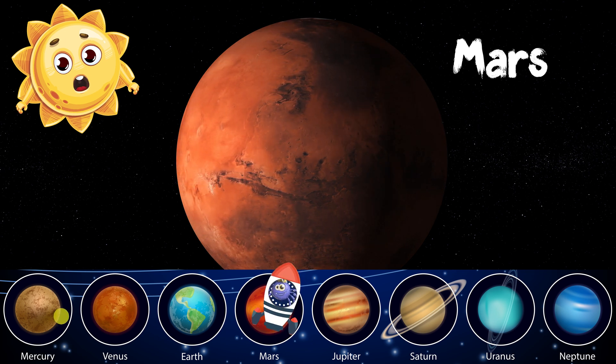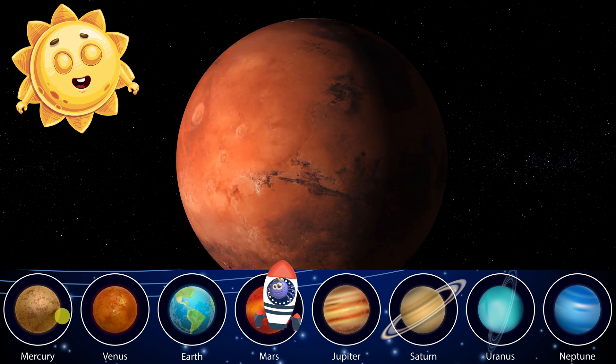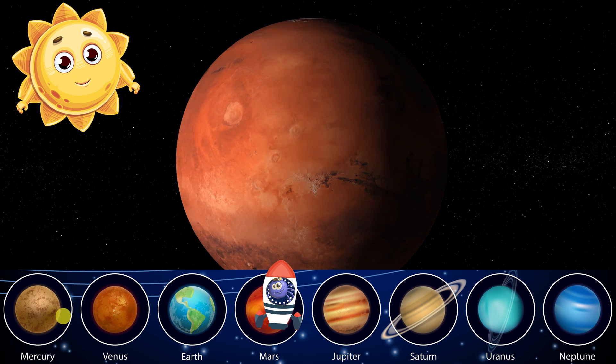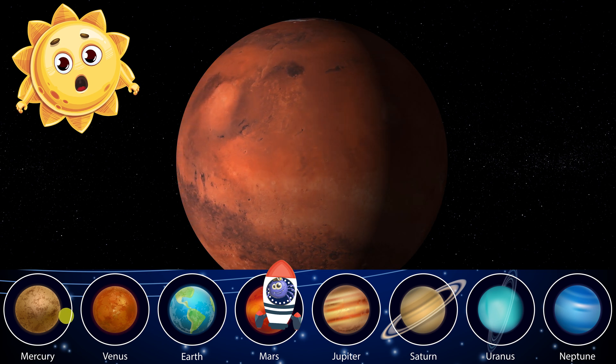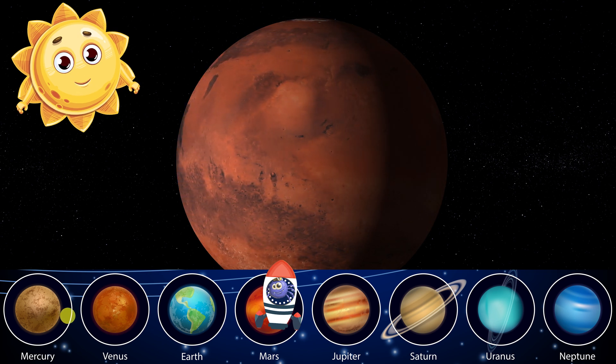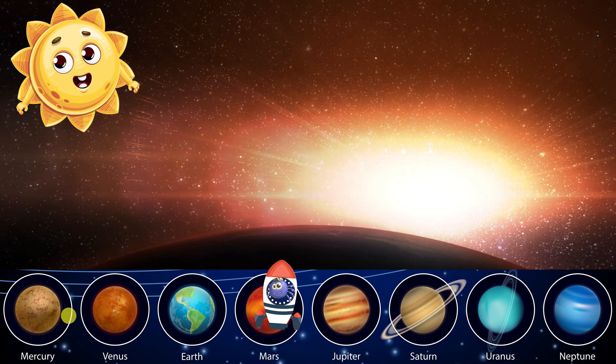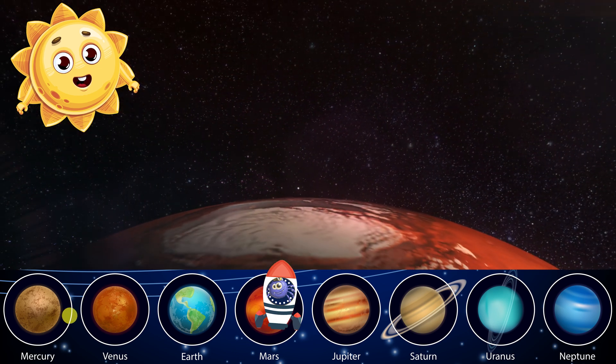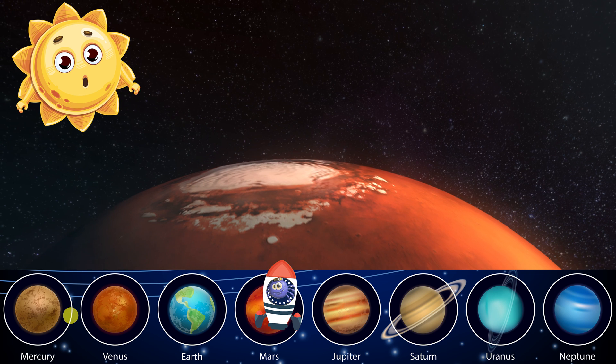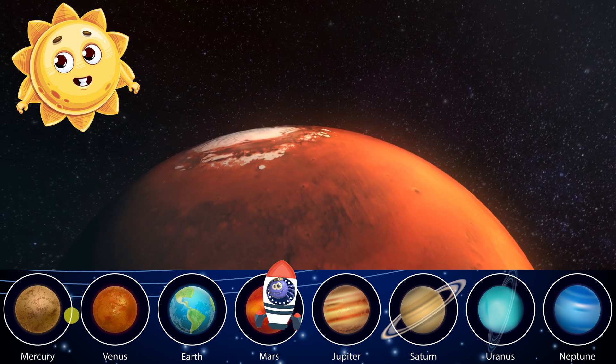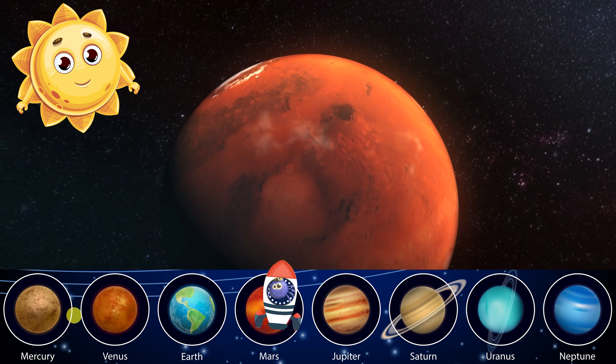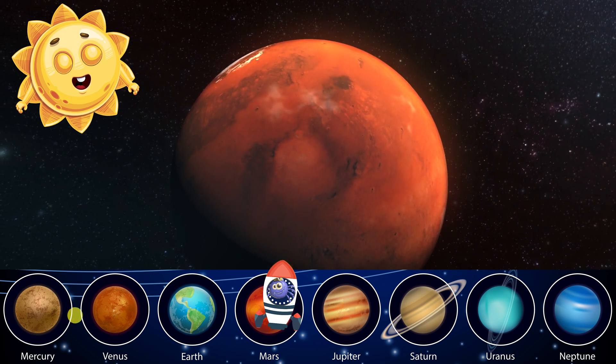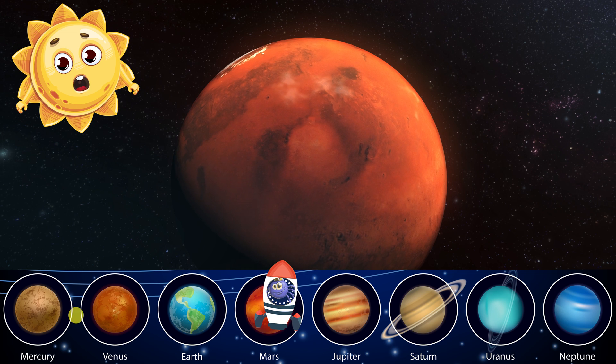Mars is the fourth planet from me and the second smallest one in our solar system. It has a thin atmosphere of carbon dioxide that makes it look red because of dust storms. It also has polar caps of ice that change with the seasons. Mars has two small moons named Phobos and Deimos that orbit around it very fast. Mars takes about 687 days to orbit around me and about 25 hours to spin on its axis. That means one year on Mars is almost twice as long as one year on Earth. One day on Mars is slightly longer than one day on Earth.